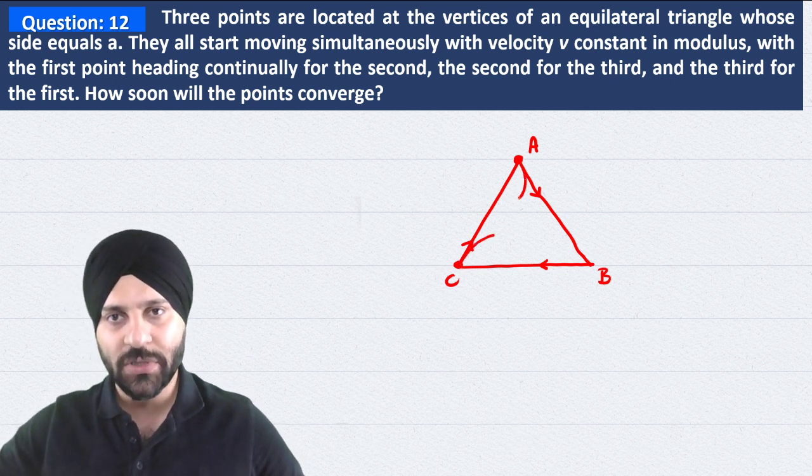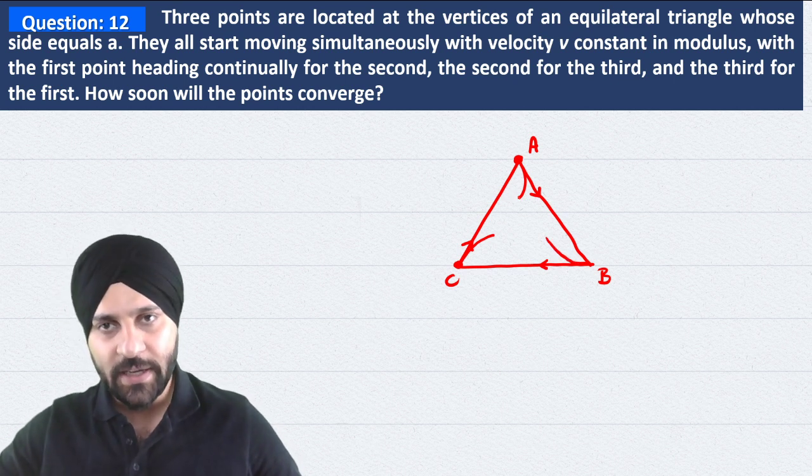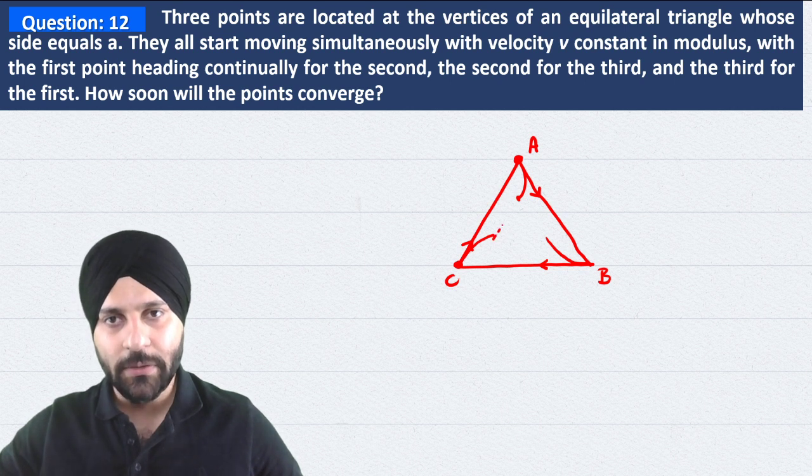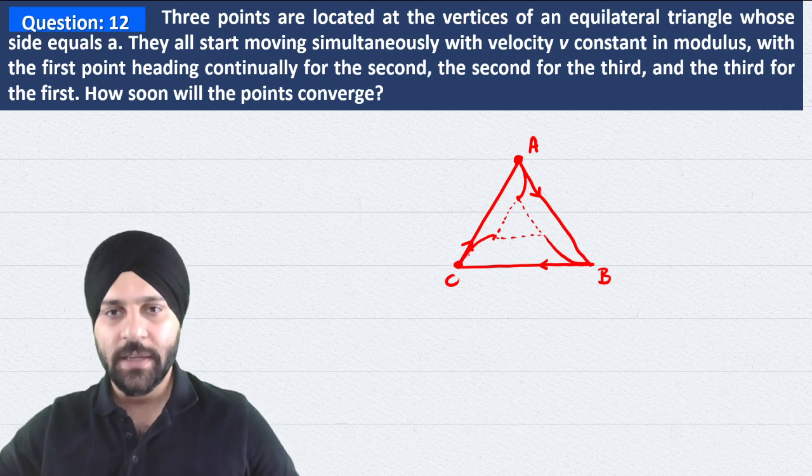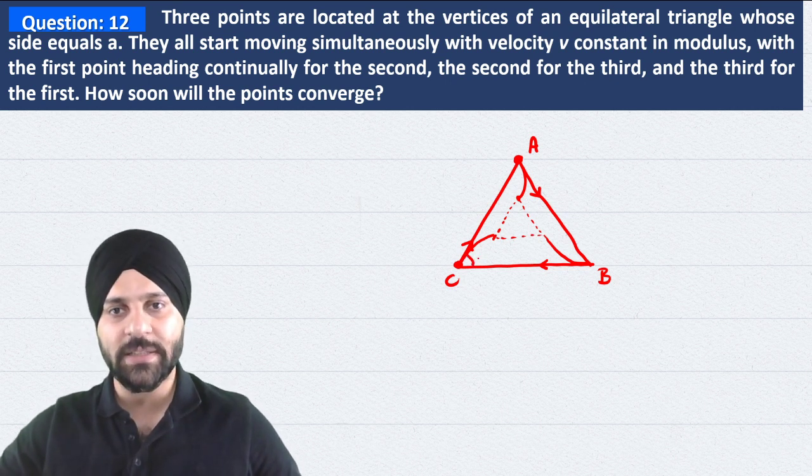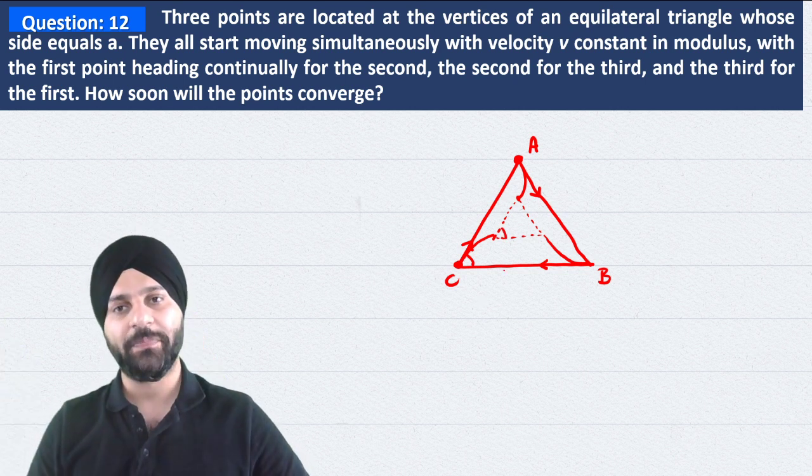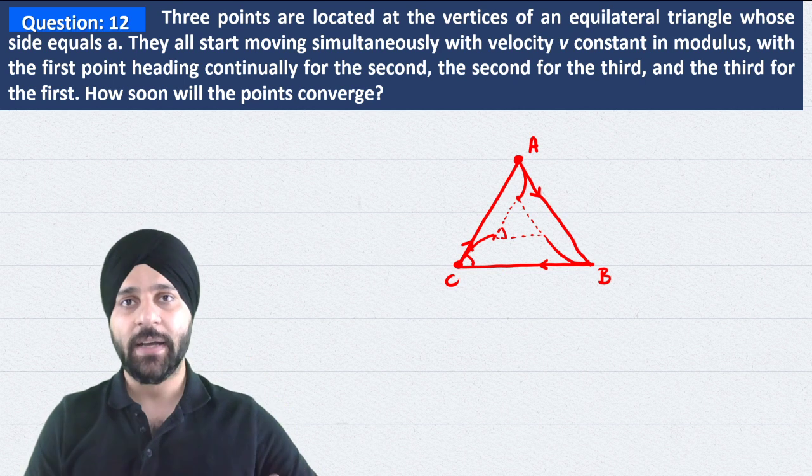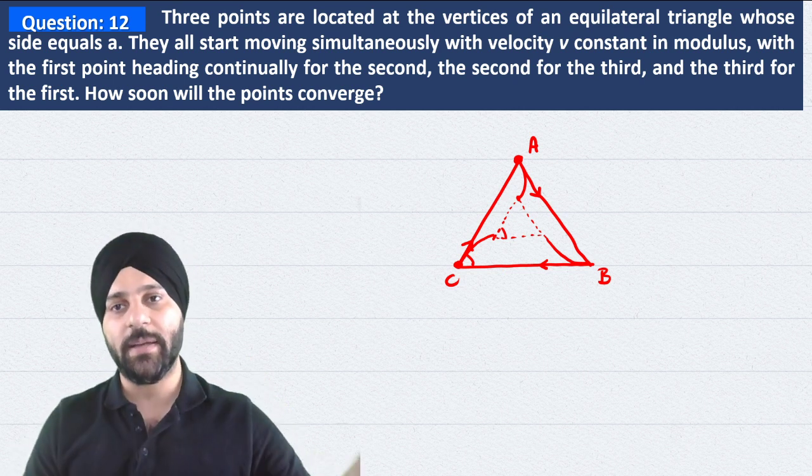So after some time, the motion will be curved and at time t later they will be located here. If you virtually connect these three points, they will again form an equilateral triangle. This means initially the angle between them was 60 degrees, and finally the angle will remain 60 degrees because the motion is completely symmetric.